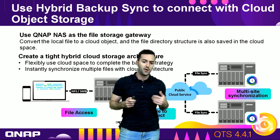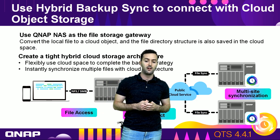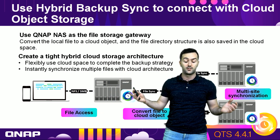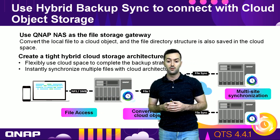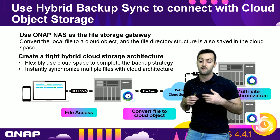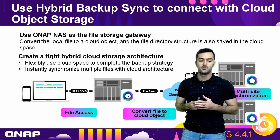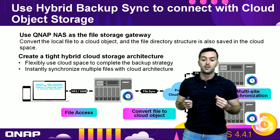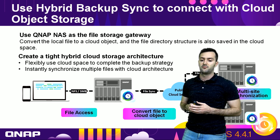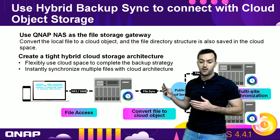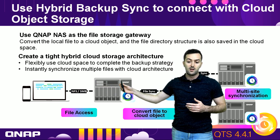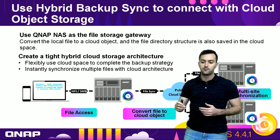You can also use Hybrid Backup Sync to connect with cloud object storage. It supports both object and file storage. Using QNAP NAS as a fast storage gateway, you can convert local files to cloud objects, and the file directory structure is also saved in the cloud space, meaning it can be flexibly used to complete your backup strategy and instantly synchronize multiple files with the cloud architecture.